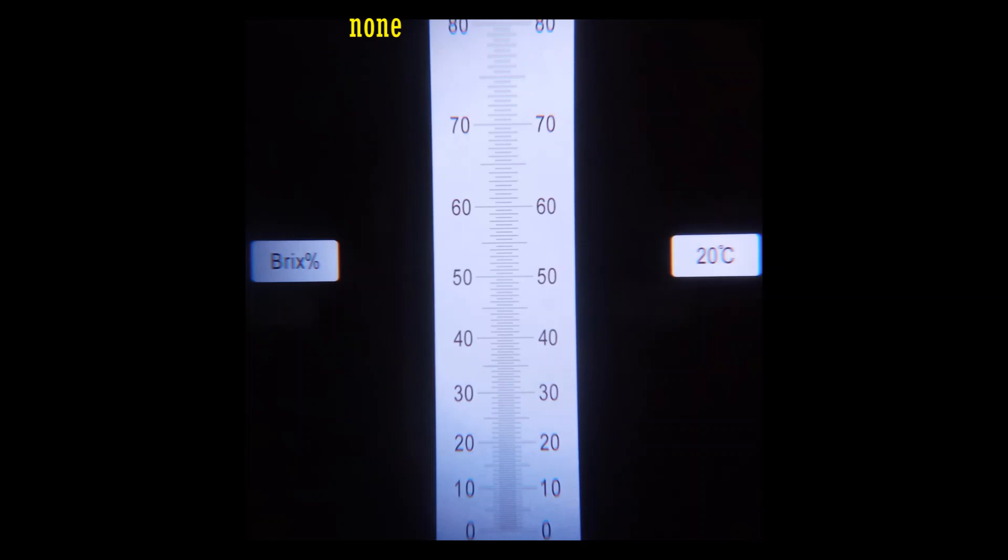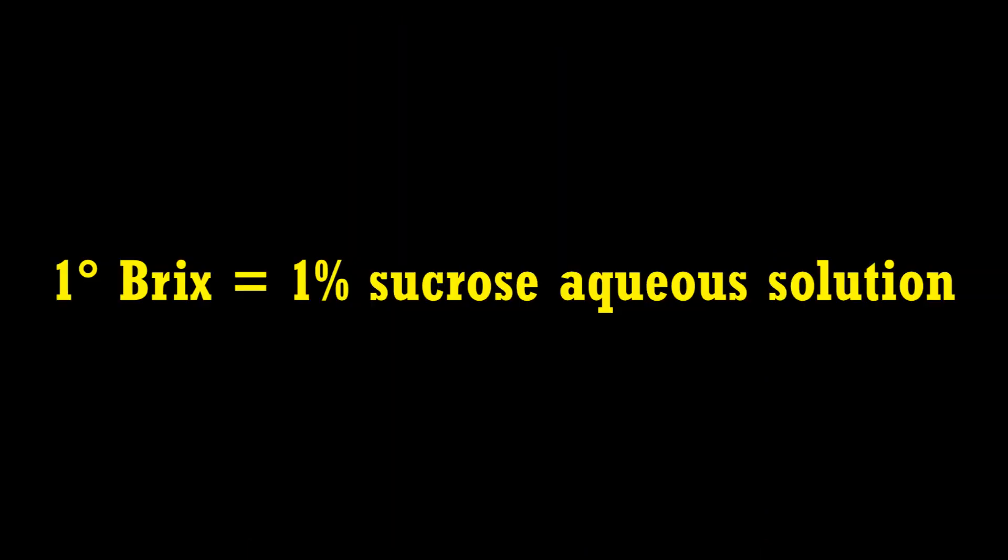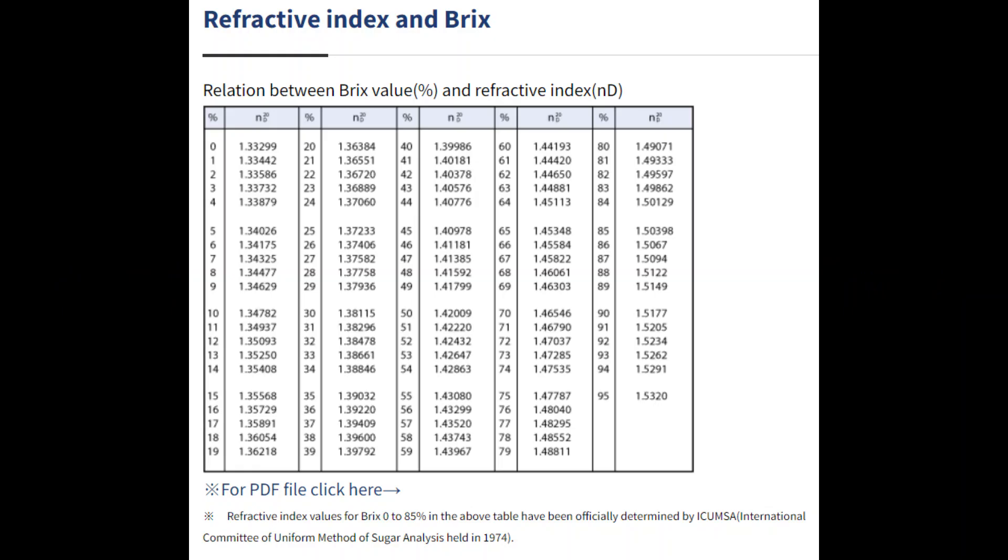If no sample is applied, what we see is the following. A scale from 0 to 80 BRIX grade. One BRIX grade correspond to 1% aqueous sucrose solution. Conversion of BRIX scale to refractive index can be found from Atago website.